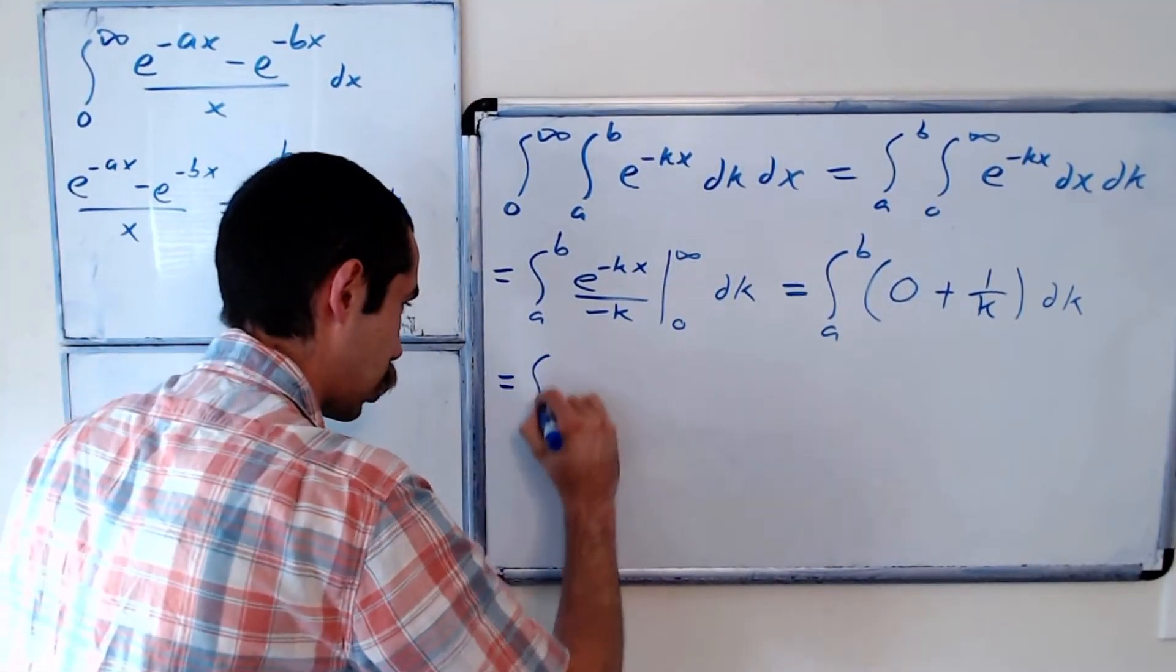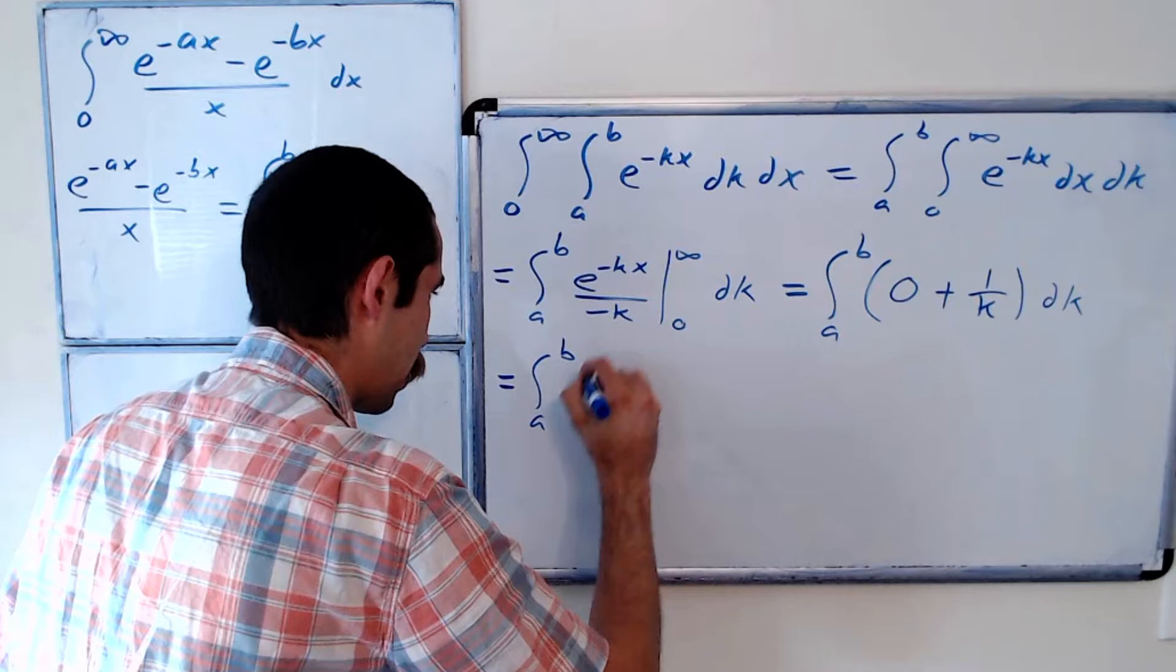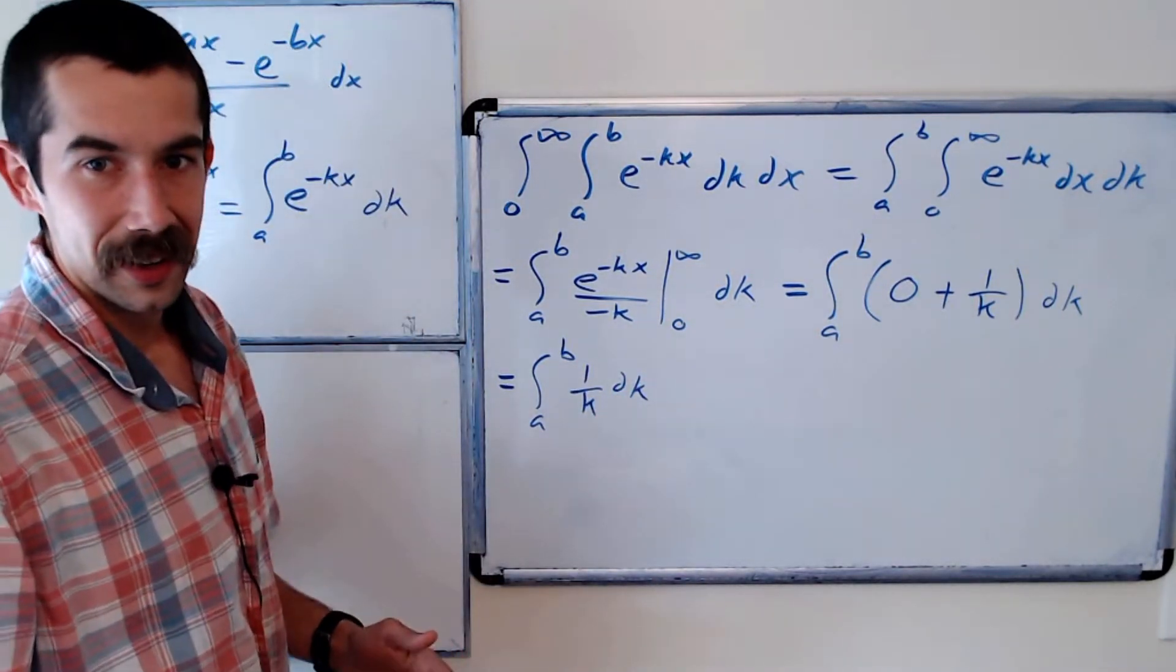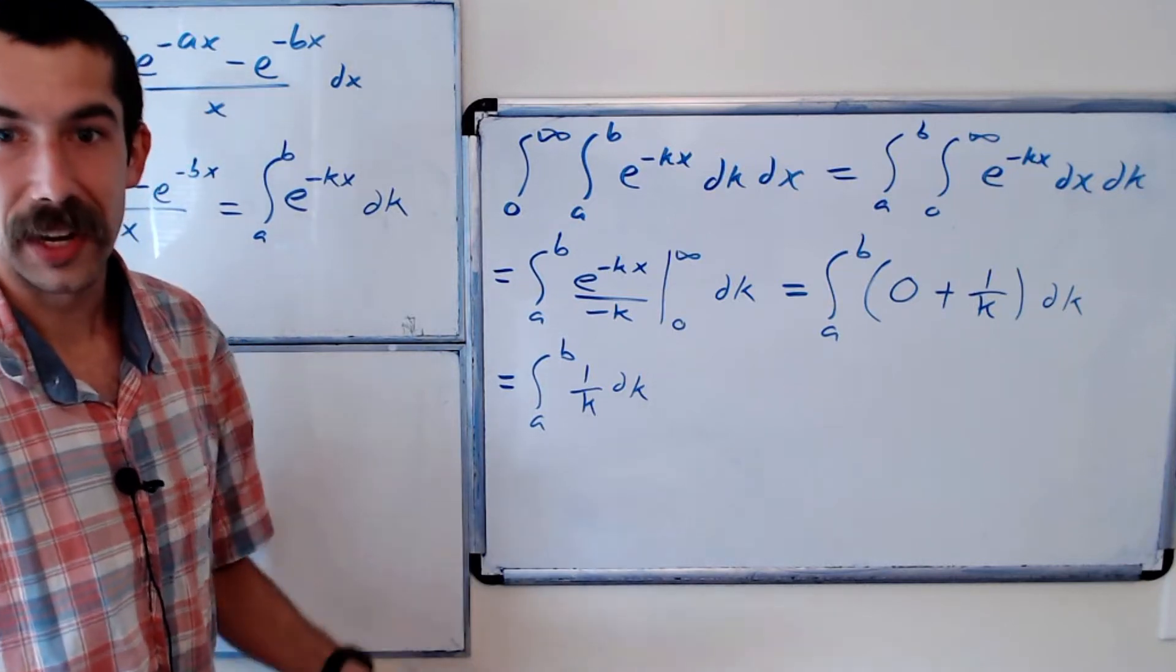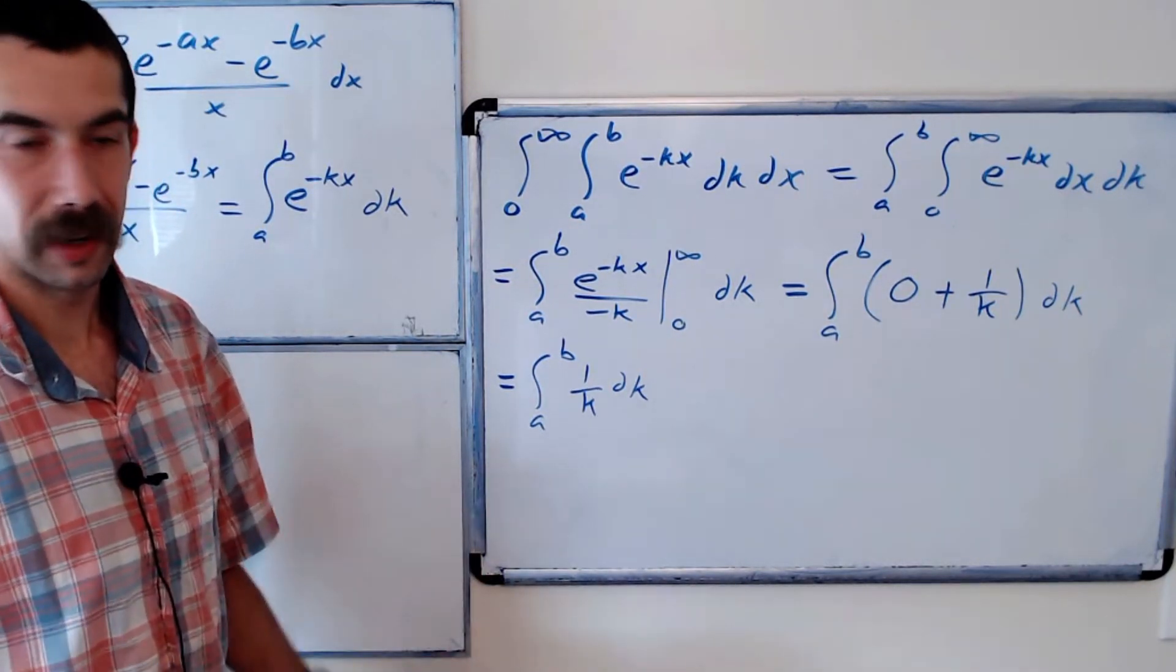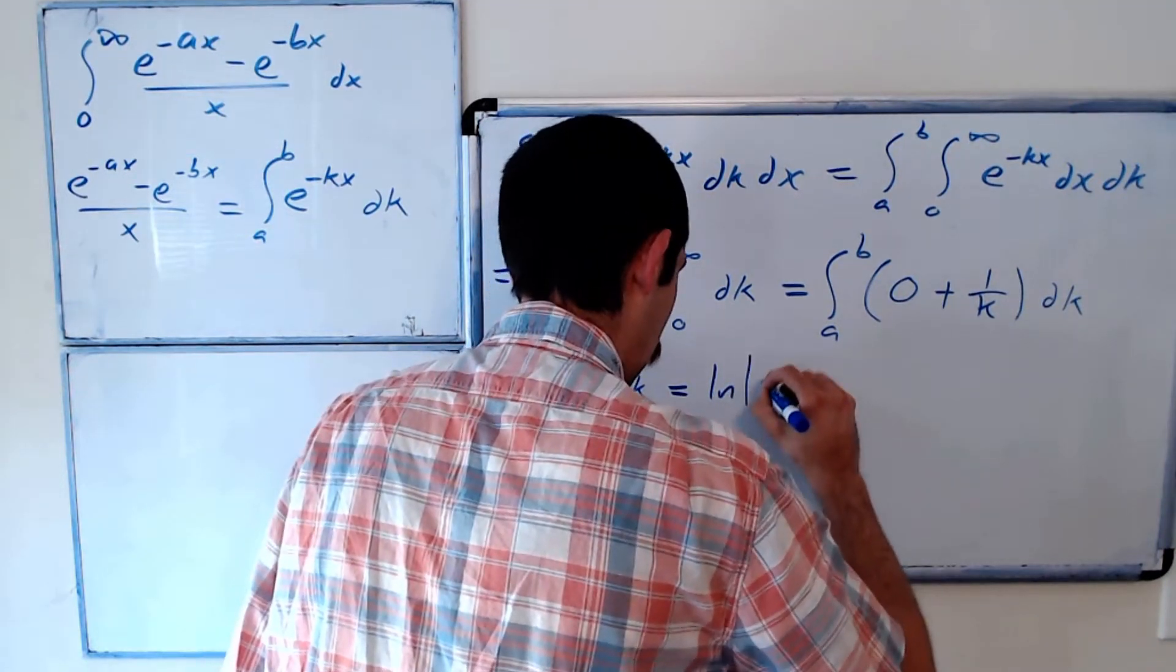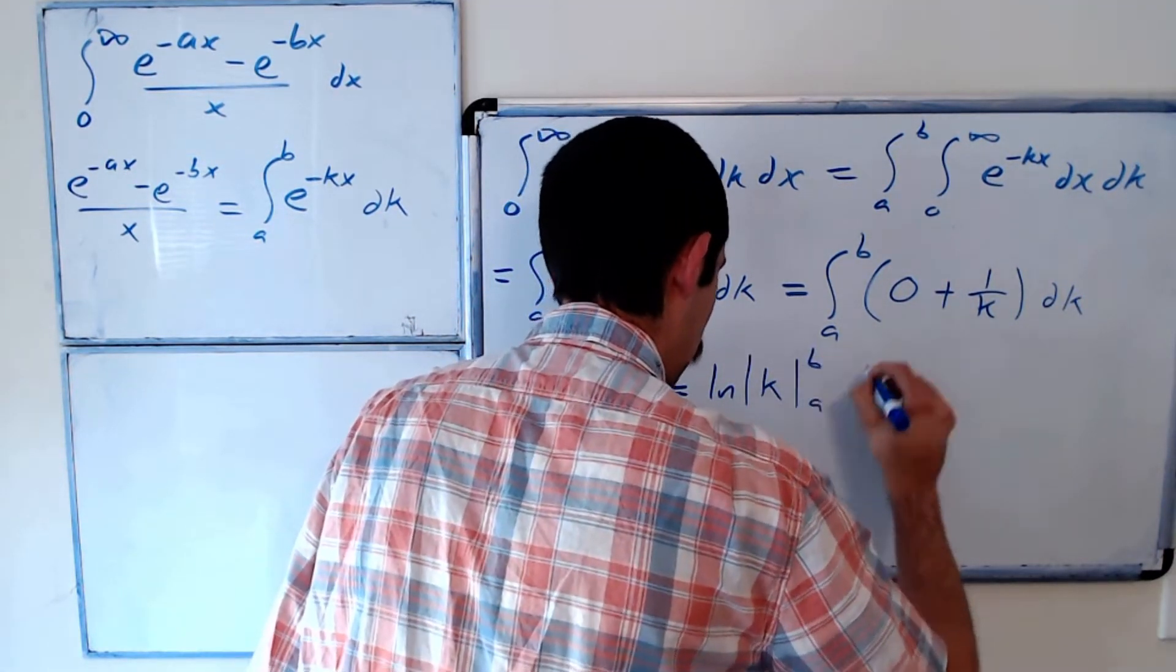Okay, so this is just cleaning it up a bit: integral from a to b of 1 over k dk. All right, what's this integral? It's the natural log of the absolute value of k. So this is equal to the natural log of the absolute value of k evaluated at a and b.